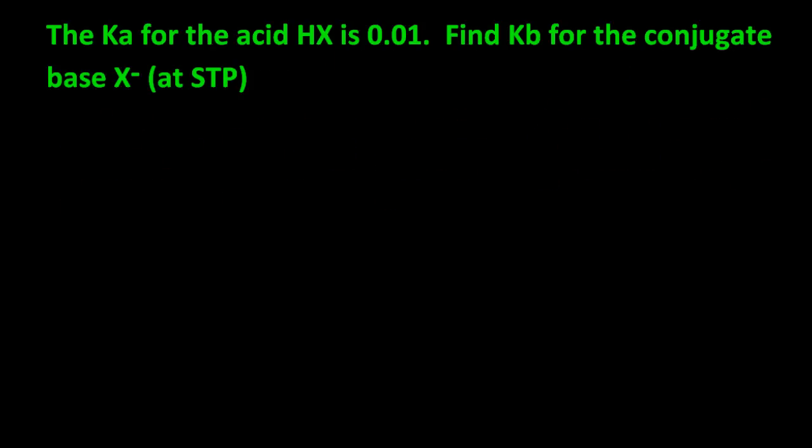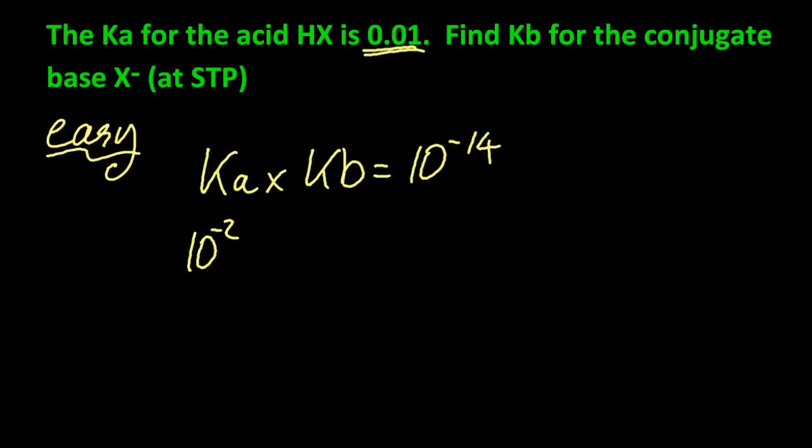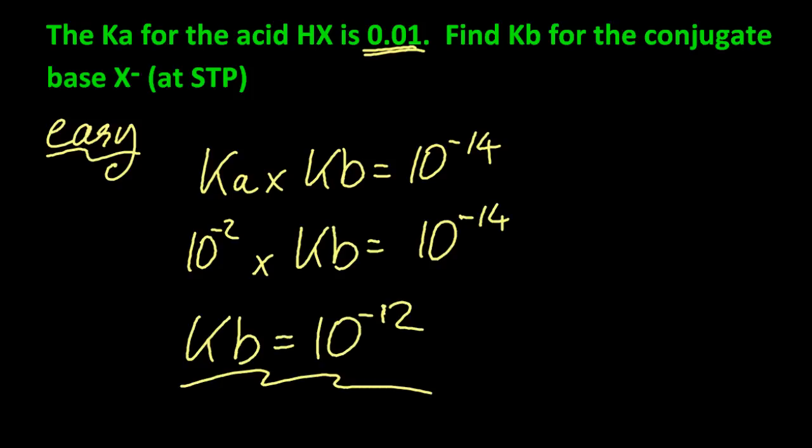This is an easy question. The Ka for the acid, HX, is 0.01. What's Kb? That's the equation that you can use. And by substituting the numbers in the question, I get Kb is 10 to the minus 12.